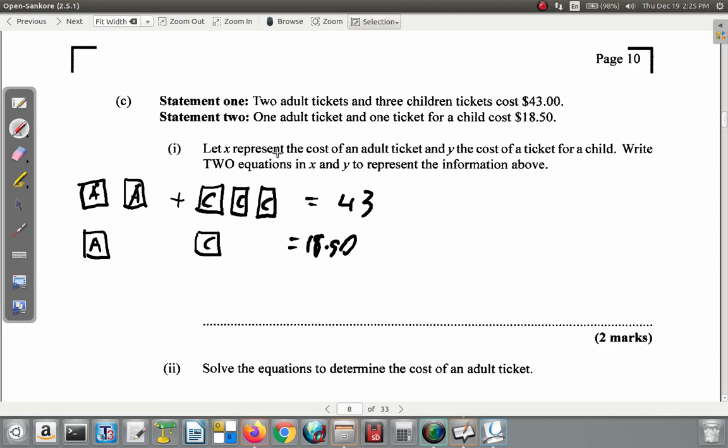X is the cost of an adult ticket. So if you're going to buy one adult ticket, you have to pay X. Two tickets, you have to pay another X. Y is the cost of a ticket for a child. So you buy this child ticket, you pay Y. You pay Y again, you pay Y. So basically what this is saying is that two X, two adult tickets, plus three child tickets, three Y, is $43.